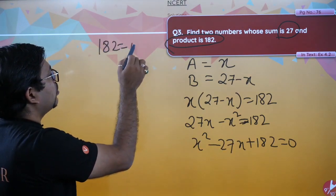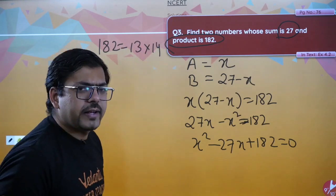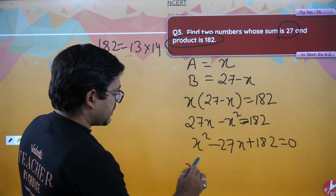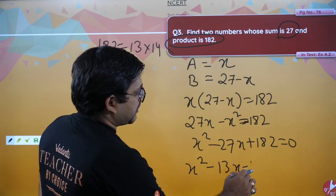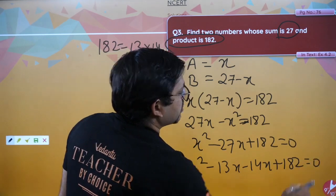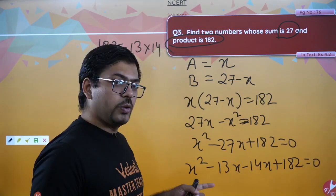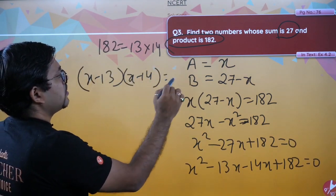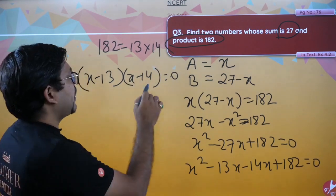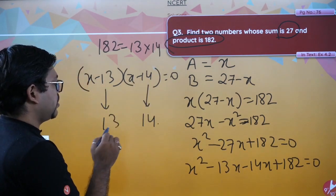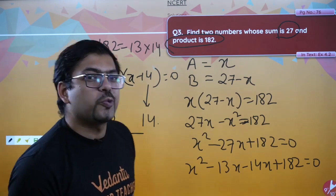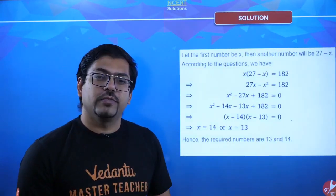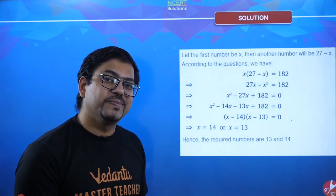Breaking 182 as 13 times 14, we get x squared minus 13x minus 14x plus 182 equals 0. Taking common factors and factorizing gives x minus 13 into x minus 14 equals 0. So x equals 13 or x equals 14. That means one number is 13 and the other is 14. Simple — that's how easy it was.